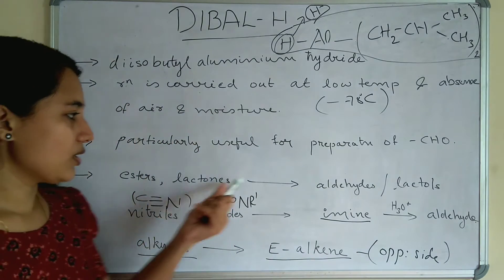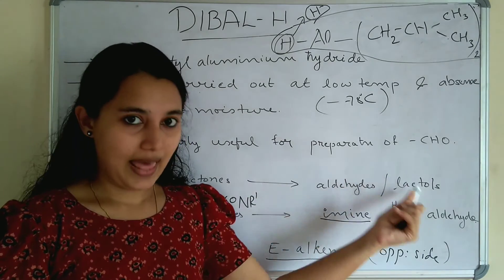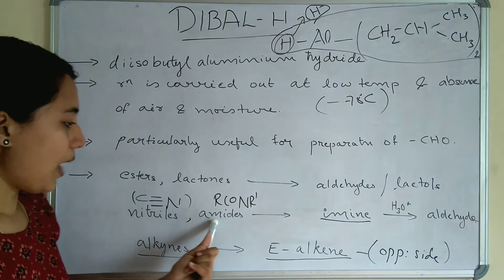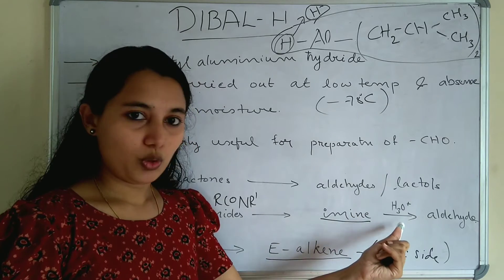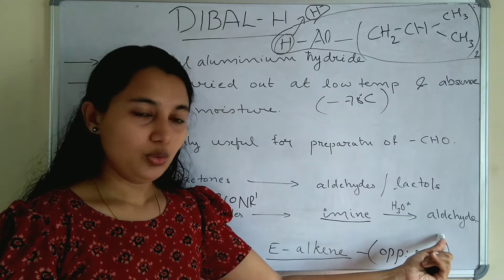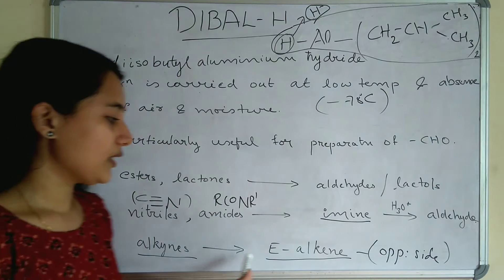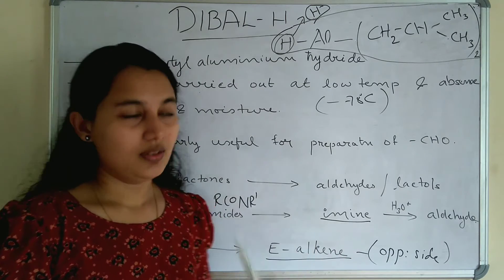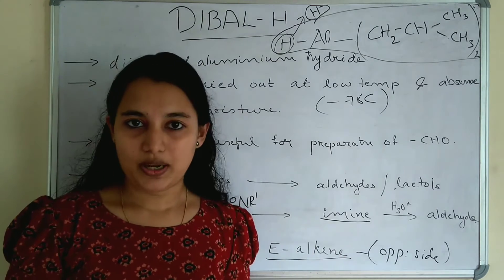Esters and lactones are converted to aldehydes or lactols. Nitriles and amides are converted to imine, and when water is added it is further converted to aldehyde. Alkynes are converted to E alkenes. So these are the key points of DIBAL-H.